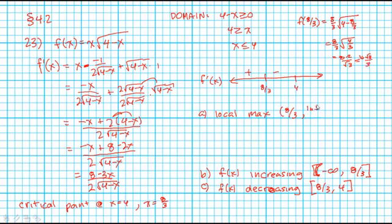So 16 root 3 over 3 there. And then also there is a local min because this function decreases when x is 4 and y is 0. So that's problem number 23.